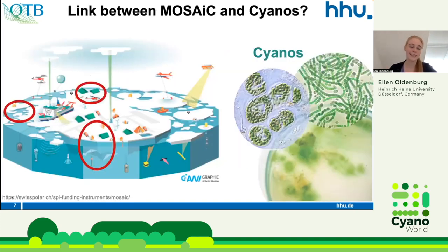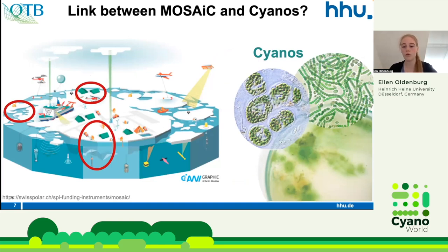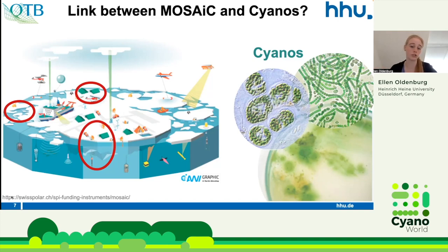The exciting thing is that at the end of June I am going on an expedition myself. There will be many ice stations, and we want to take freshwater samples to hopefully find cyanobacteria among other freshwater organisms. I will show you my workflow for how I deal with my current data, which I would like to apply to the data from my expedition. I would be very happy to receive further suggestions on what samples to take or what we could pay special attention to.